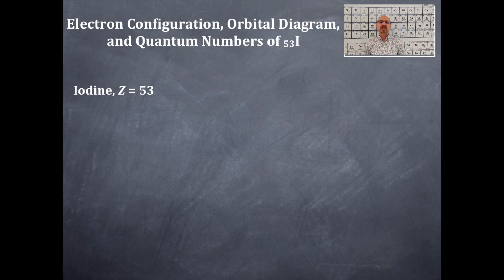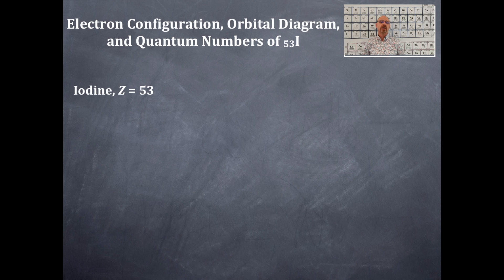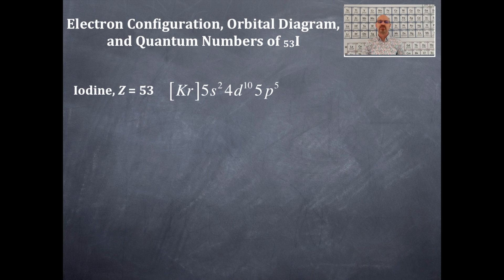Iodine has a Z, or atomic number, of 53. You definitely need a periodic table to do every single one of these types of problems. Using the noble gas notation, the noble gas prior to iodine is krypton. So krypton is in brackets, then we have 5s², 4d¹⁰, 5p⁵.